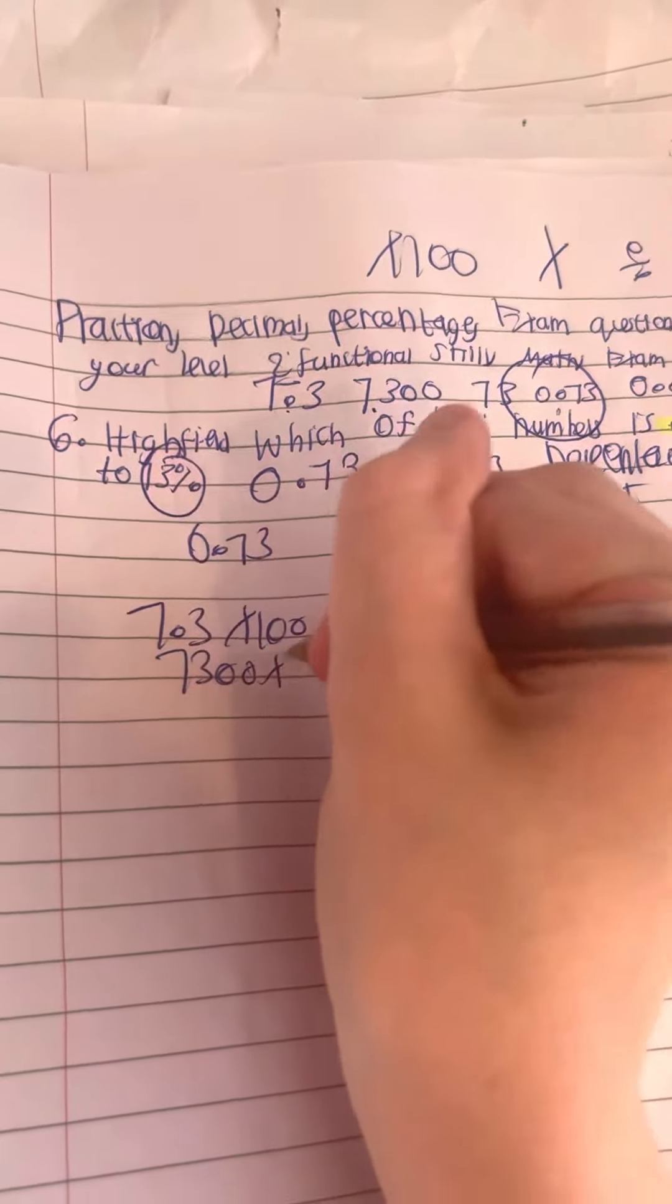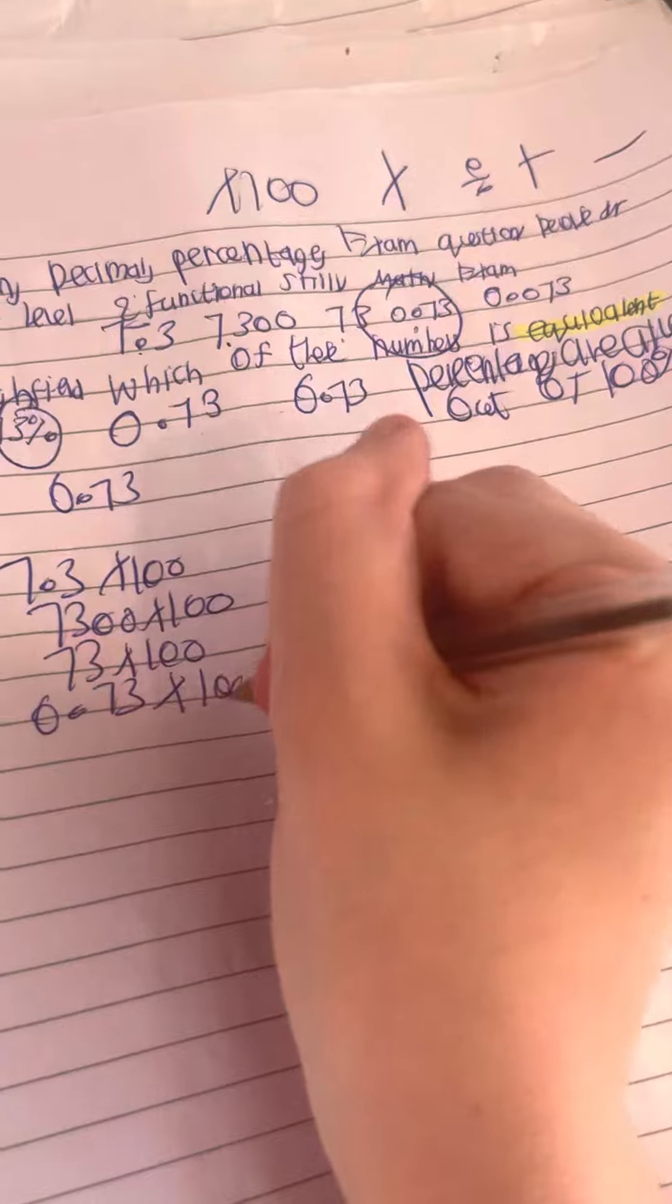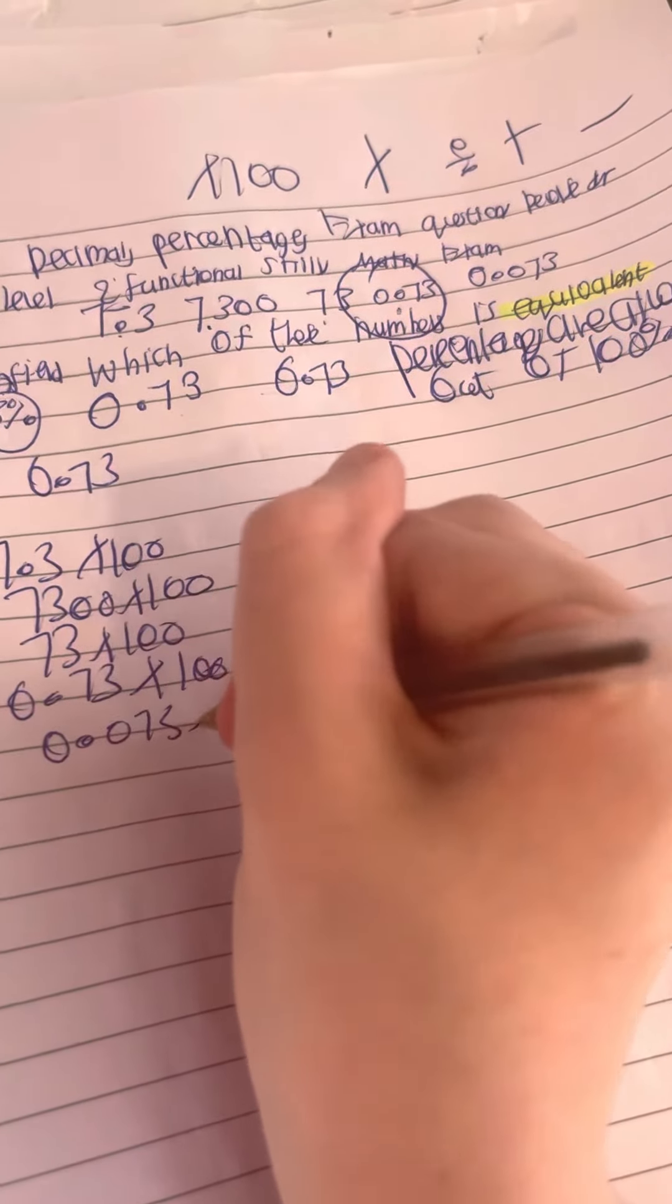7300 times 100, 73 times 100, 0.73 multiplied by 100, 0.073 times 100.